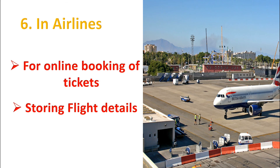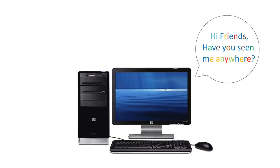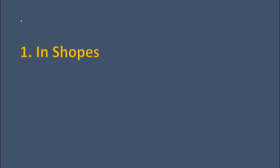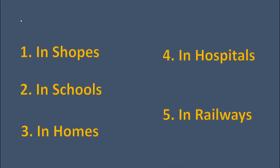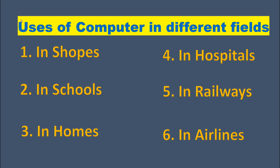Now dear children, can you say the answer to our computer? What was the question of our computer? 'Have you seen me anywhere?' Now can you say where all you have seen the computer? Say along with me: first one — in shops, then in schools, then in homes, then in hospitals, then in railways, and one more — in airlines! Very good, children. This is the topic we have to study in our first chapter: the topic is 'Uses of computers in different fields.'